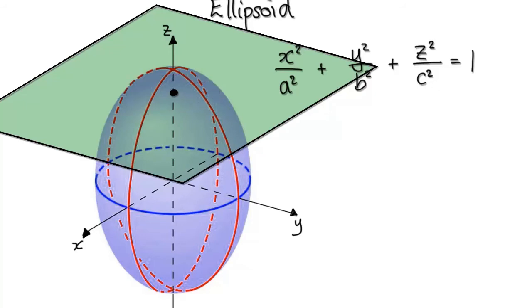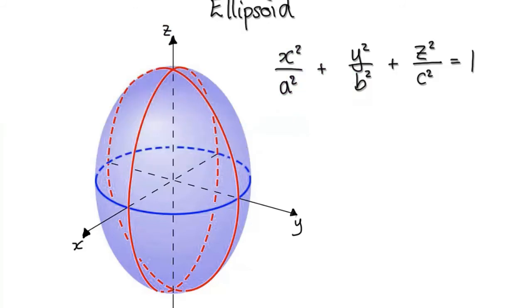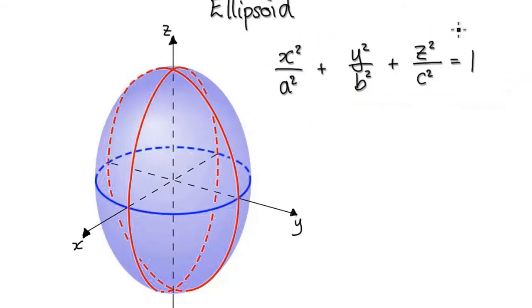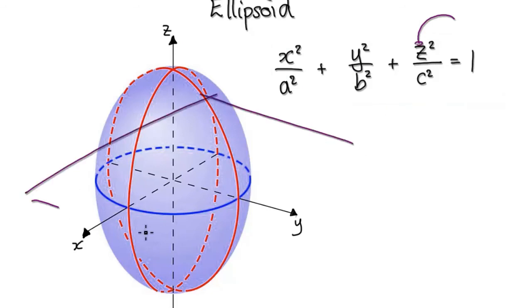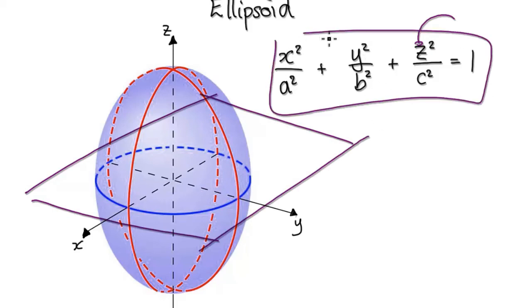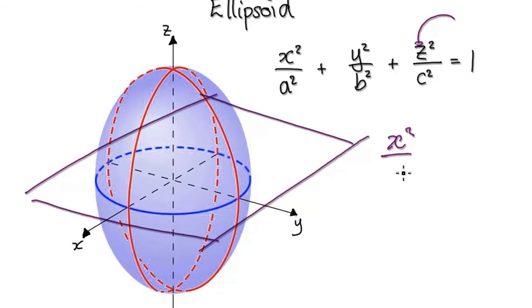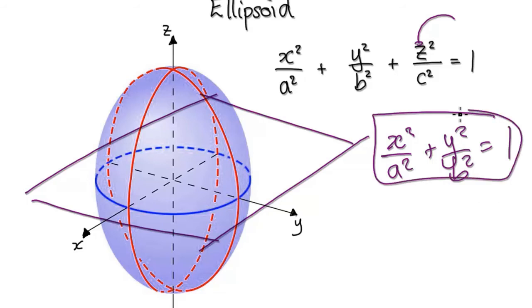Given this equation, if you put 0 into z, picture a horizontal sheet of paper at a height of 0. You can see that the z-term disappears, giving you y squared over b squared equals 1. The minute you see this, you're either going to get a circle or an ellipse.